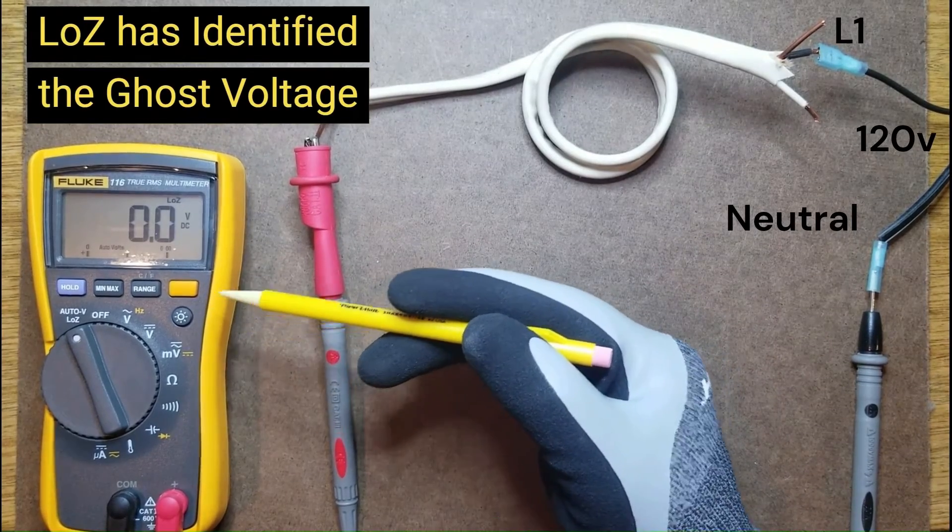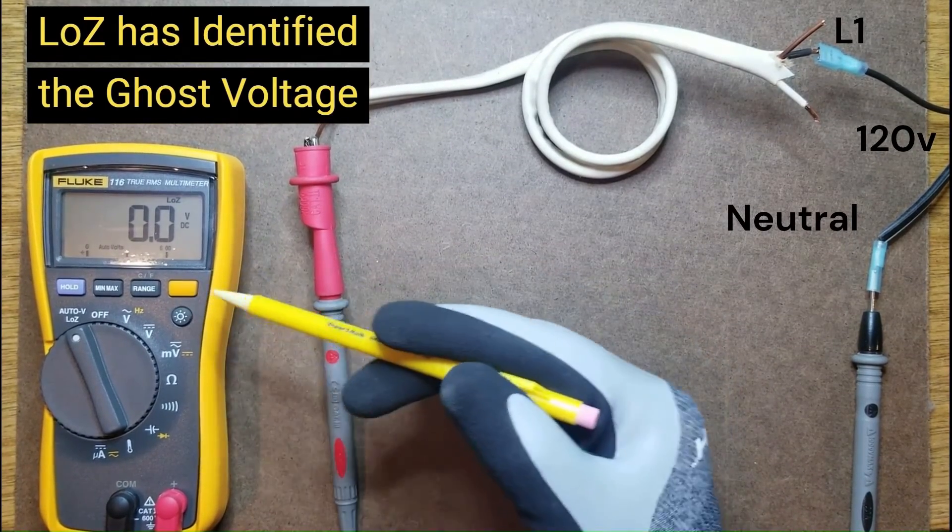Therefore, by using low Z, we have easily determined that what we were reading was a ghost voltage.